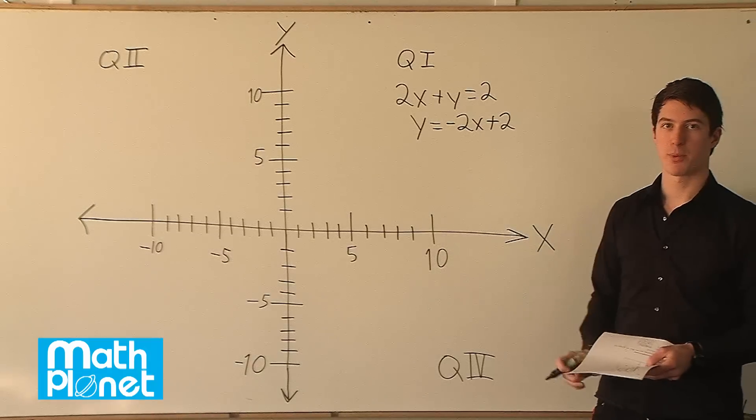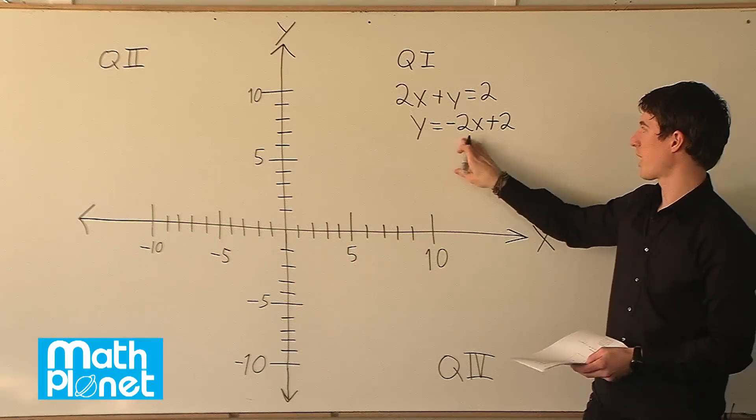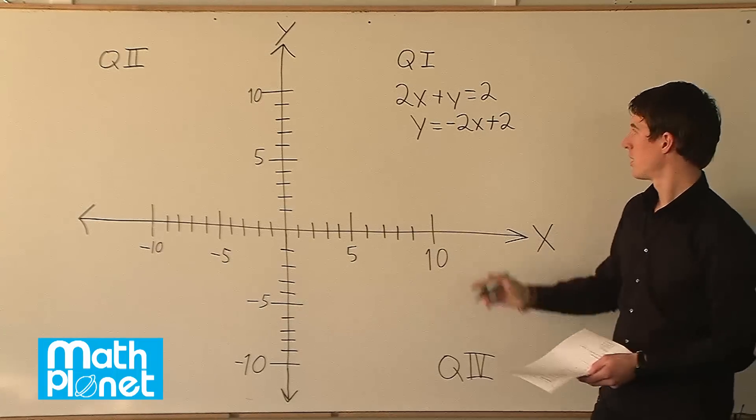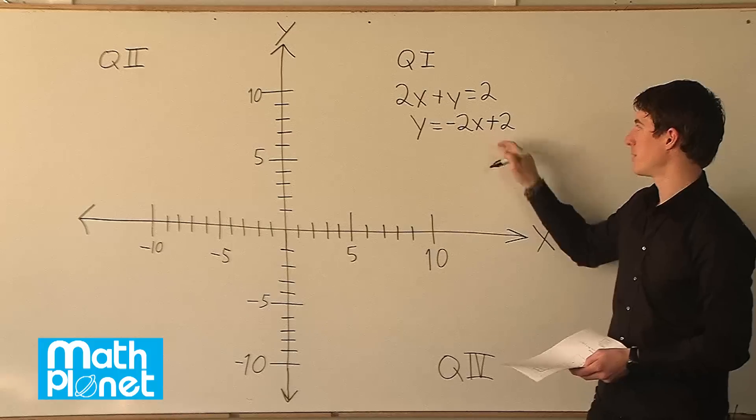So this is great, this is already in the slope intercept form or y equals mx plus b form. So m is negative 2 and b is positive 2.